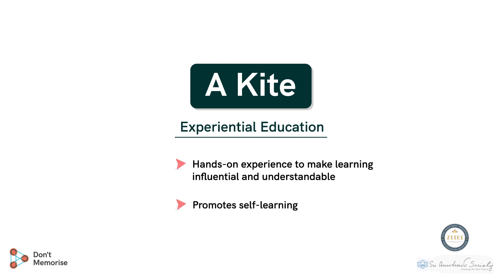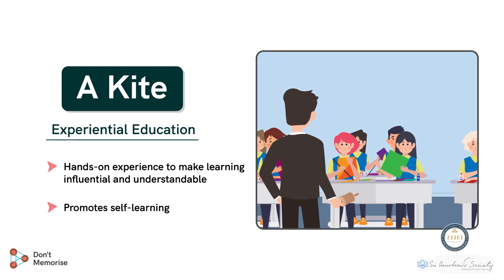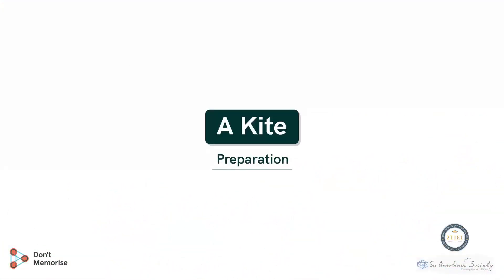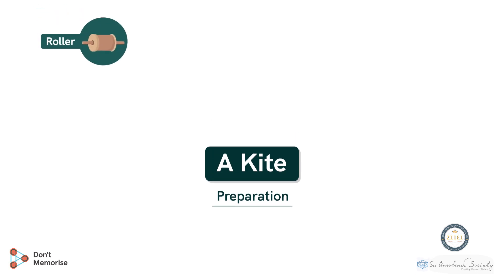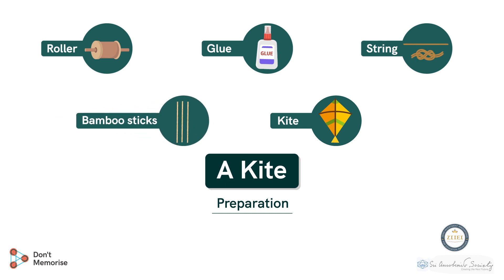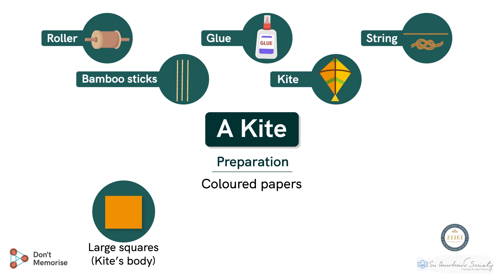Before we begin with the activity, we will need to arrange a few materials. We will need a roller, glue, some string, a kite, and some very thin bamboo sticks. We will also need colored paper. For the students to make the kites, we need to cut the paper into large squares for the body of the kite.